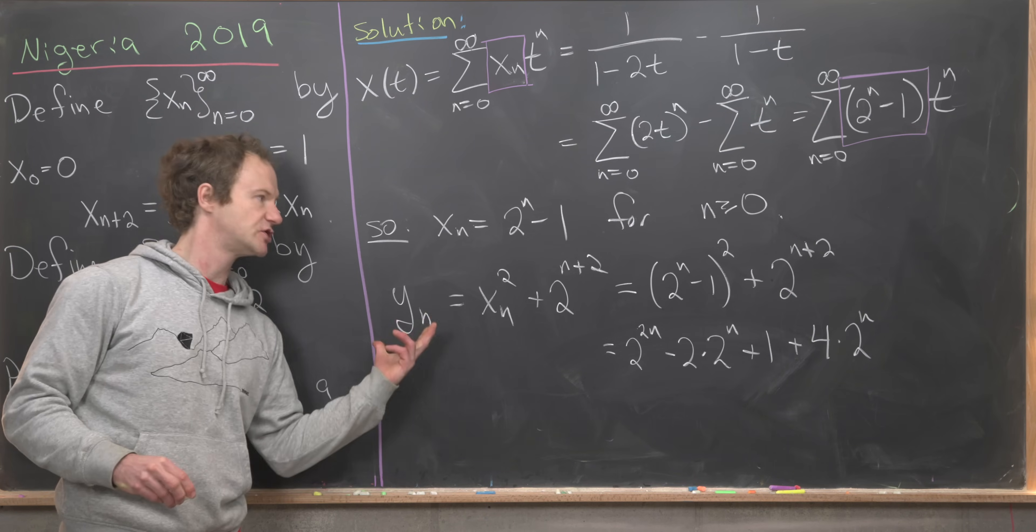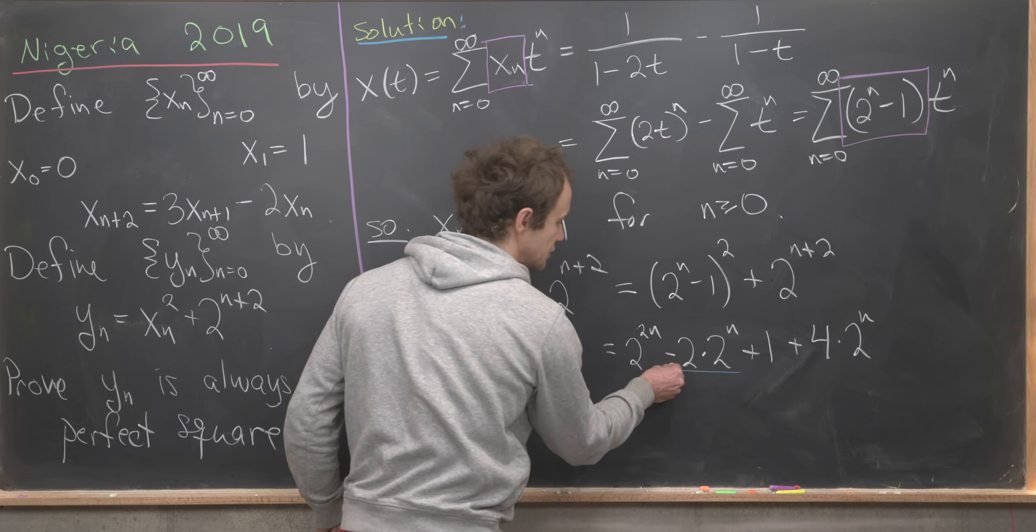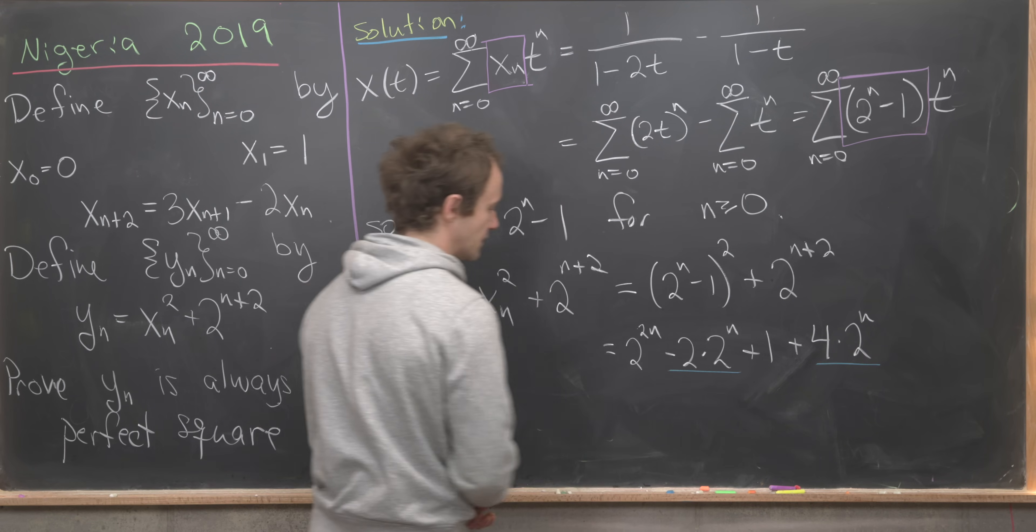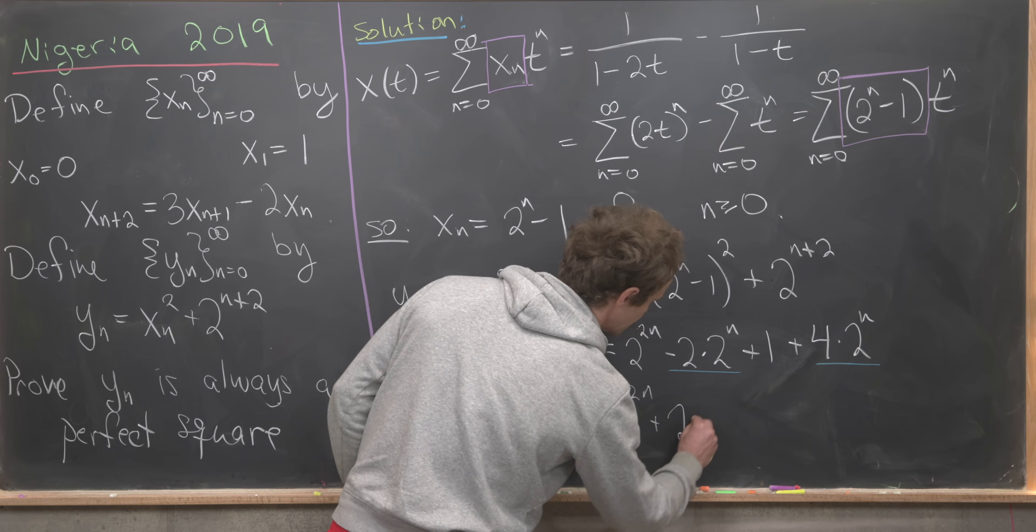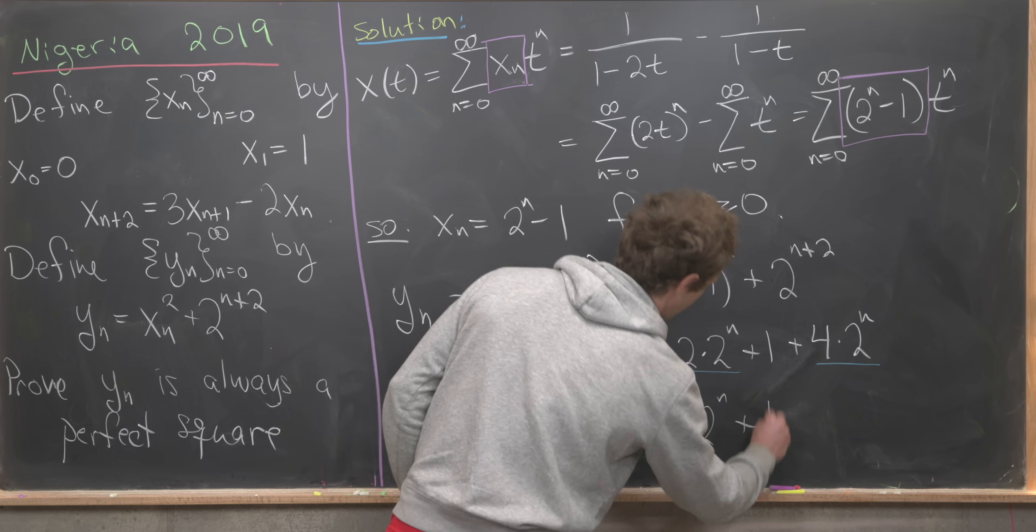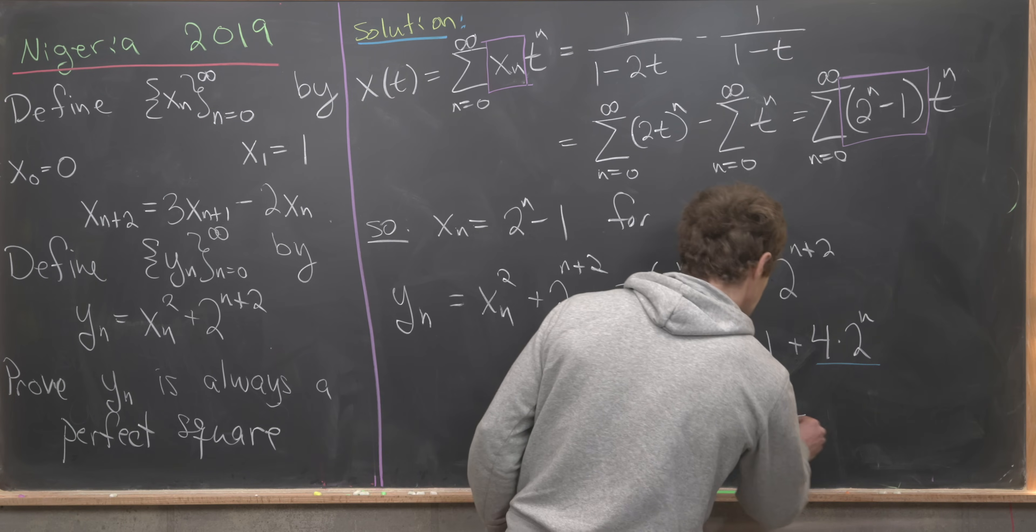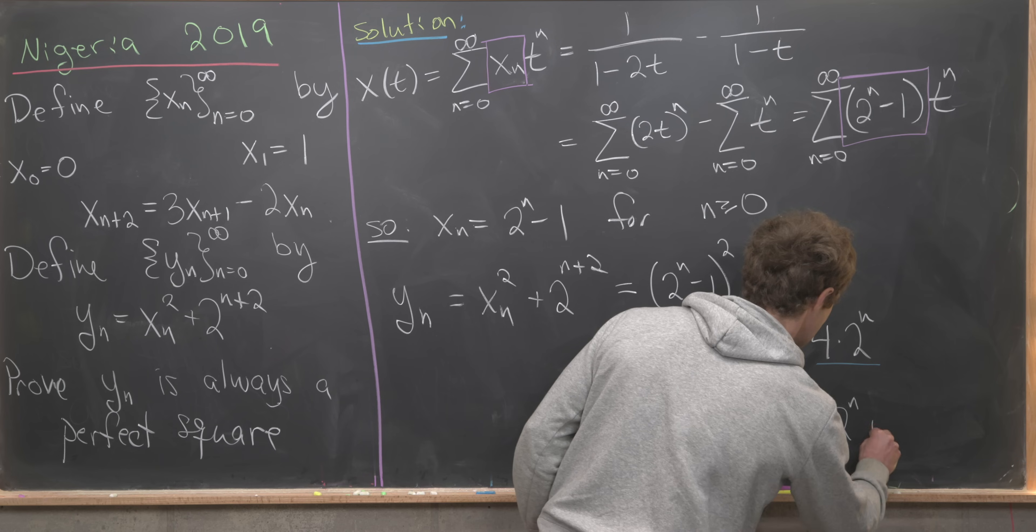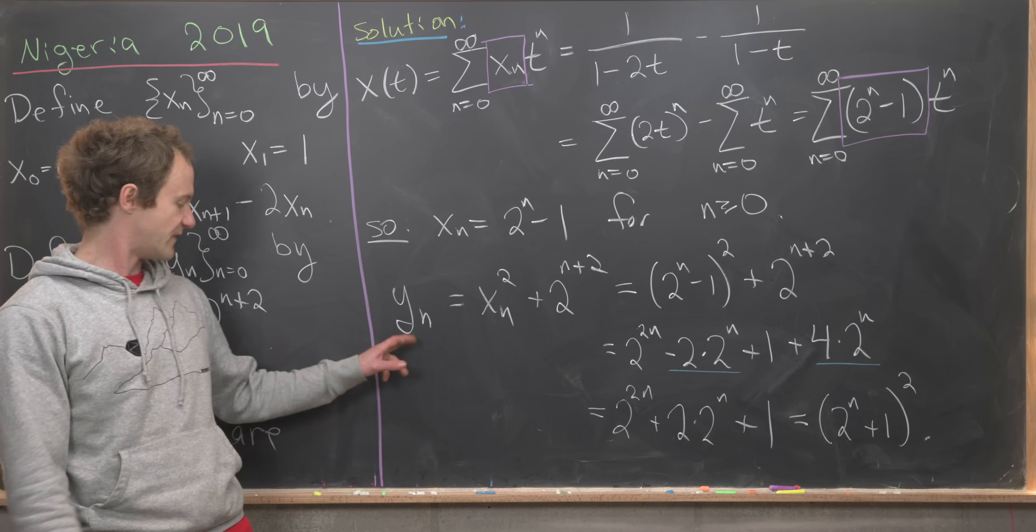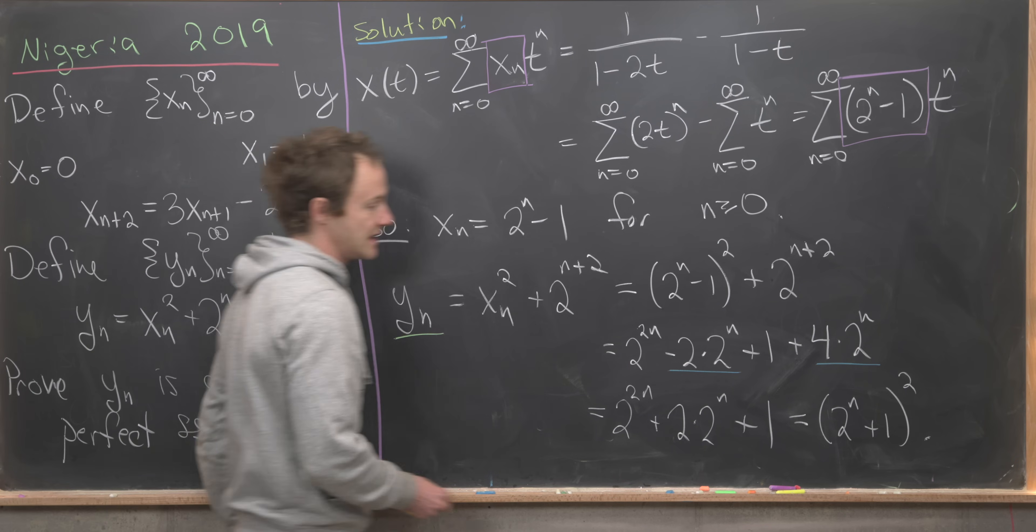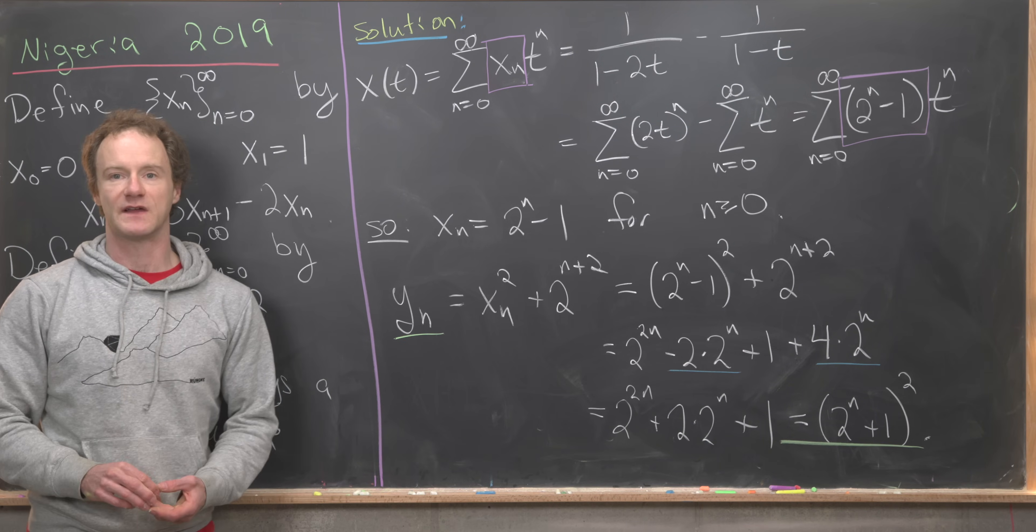I can split that 2 squared times 2 to the n apart. Now we can combine this blue underlined term with this blue underlined term to see that we get 2 to the 2n plus 2 times 2 to the n plus 1. But that's a nice perfect square binomial. In fact we can factor this as 2 to the n plus 1 quantity squared. So we've ended up with our sequence y sub n is always a perfect square and that's a good place to stop.